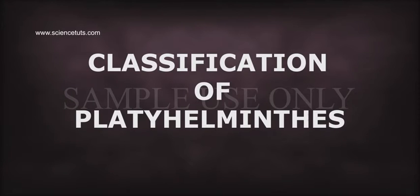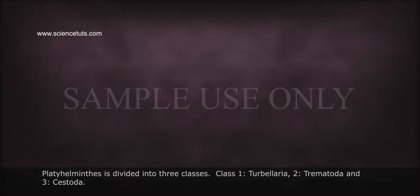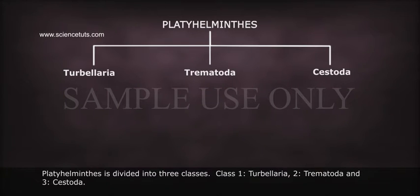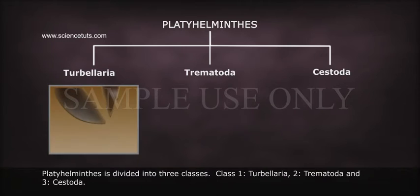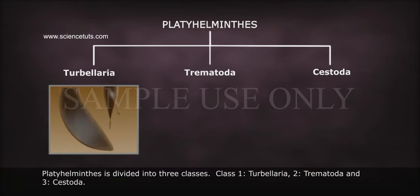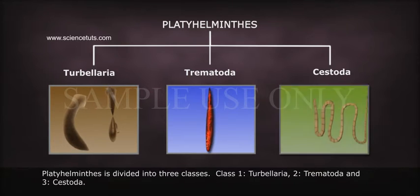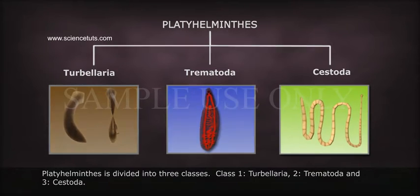Classification of Platyhelminthes. Platyhelminthes is divided into three classes: Class I, Turbellaria; Class II, Trematoda; and Class III, Cestoda.